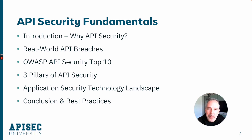Next, we'll cover the three pillars of API security — governance, testing, and monitoring — and examine each in detail. Then we'll review the application security technology landscape, looking at what technologies exist, where they fit, and what gaps you might have to fill.